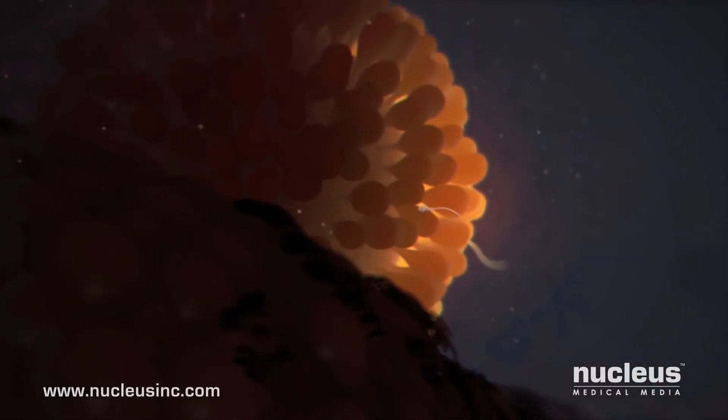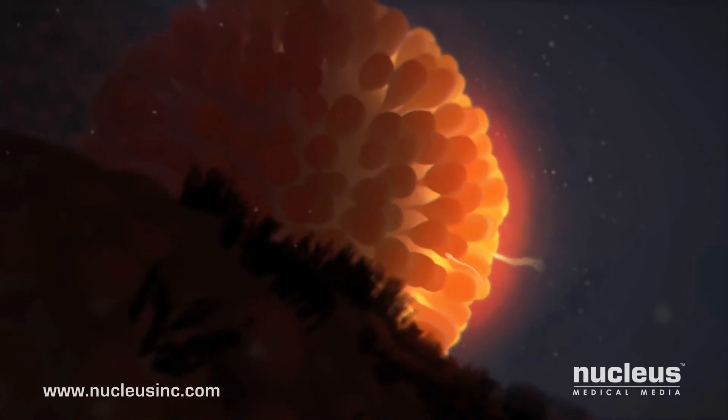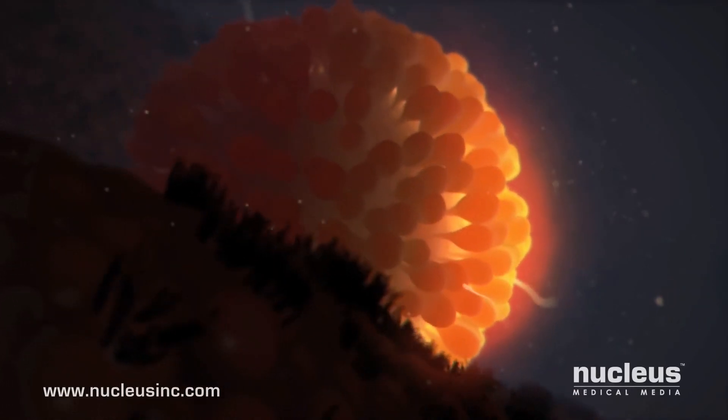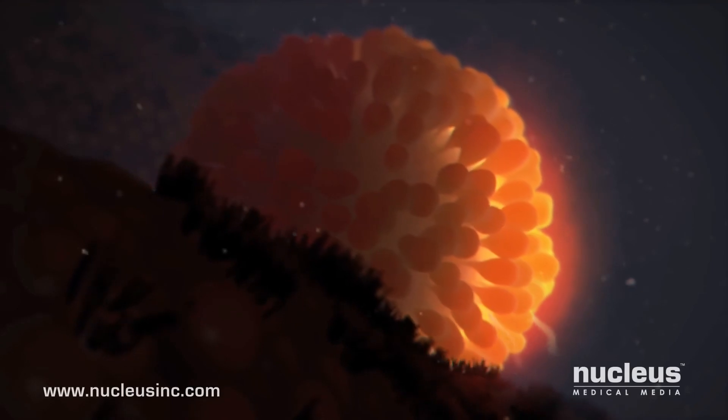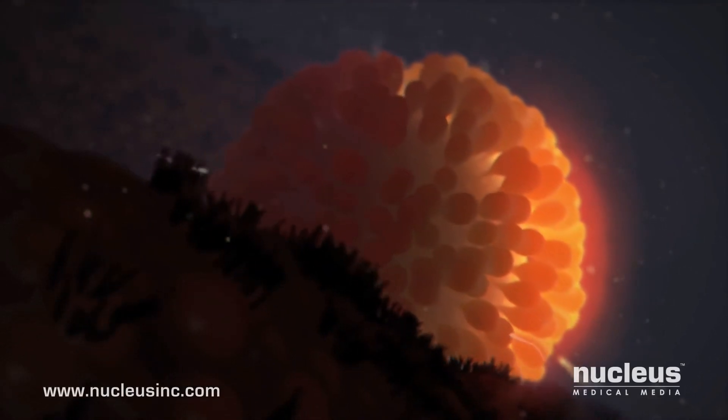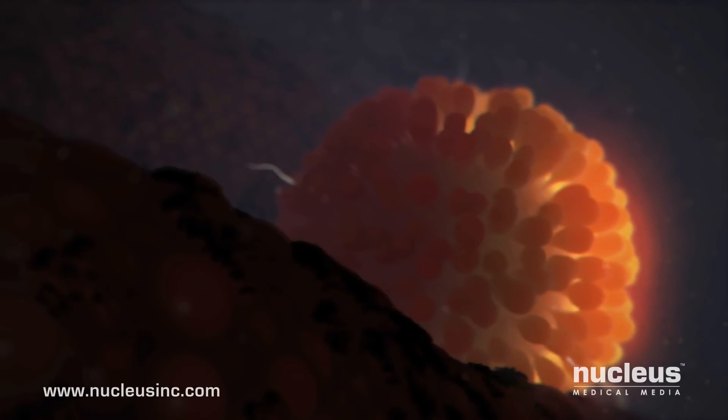And now, the cilia in the fallopian tube gently sweep the zygote toward the uterus, where he or she will implant in the rich uterine lining, growing and maturing for the next nine months until ready for birth.